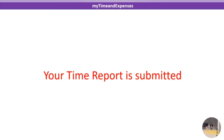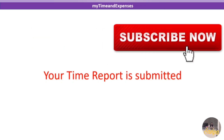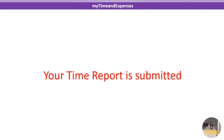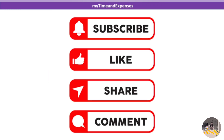The Adjustments tab is used when something was wrong in the current fortnight — for example, if your project gave you a new charge code after you already submitted. In the next fortnight, you can change the previous fortnight's charge codes and resubmit. Those corrections will appear in the Adjustments tab. That covers everything about the MyTE submission process. I hope every step is clear.